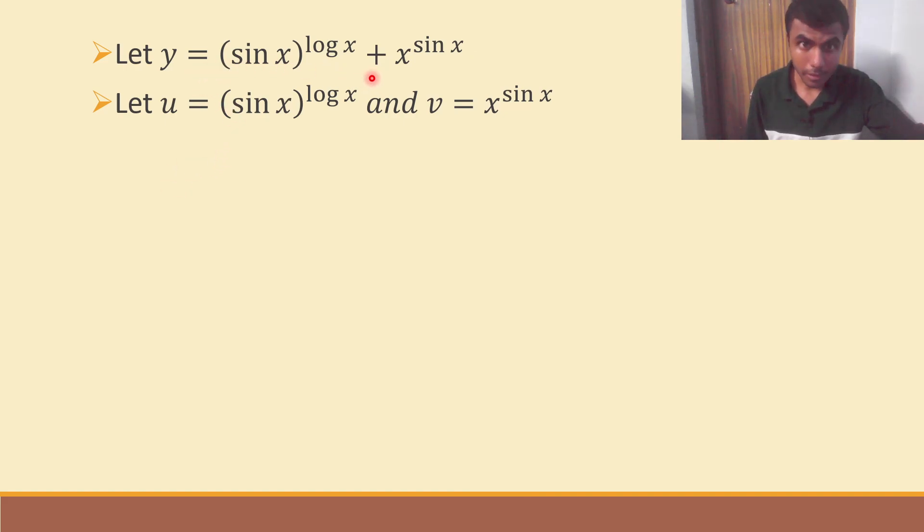So, this I'm going to take it as u and this I'm going to take it as v. Now, y is nothing but u plus v, right? This is u, this is v. Now, differentiate both sides of this equation, y equals u plus v, with respect to x. What you would obtain is, dy by dx is nothing but du by dx plus dv by dx.